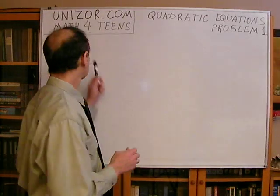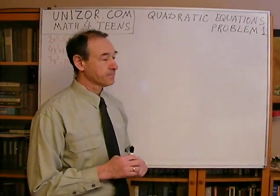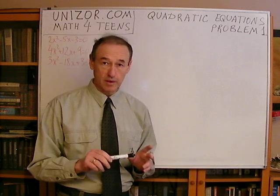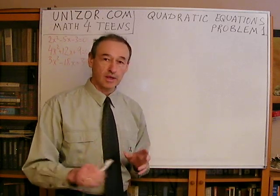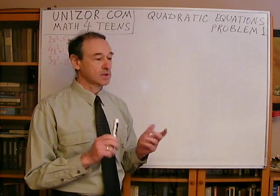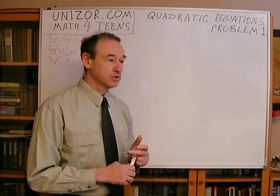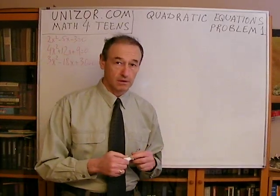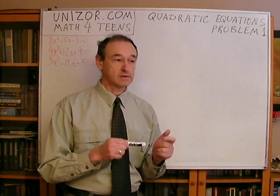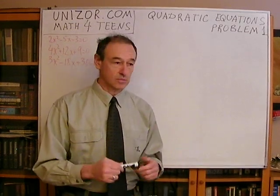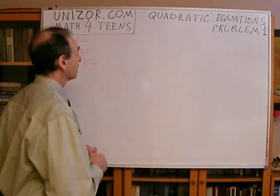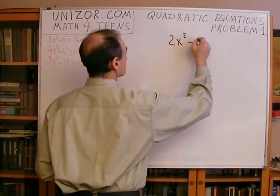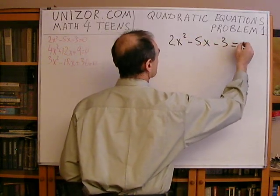I have two different equations here. First of all, we are going to solve these equations in the area of real numbers. For complex numbers, we will have a different set of problems. I have prepared three different equations: one will have two different solutions, another will have only one, and the third one will have none. So number one is 2x squared minus 5x minus 3 equals zero.